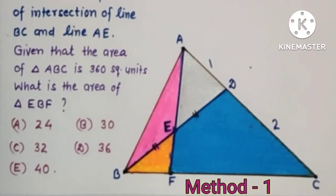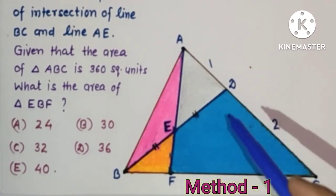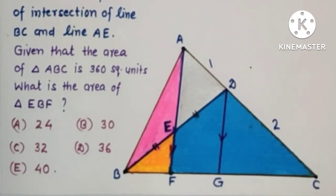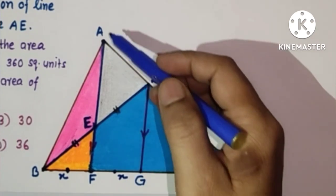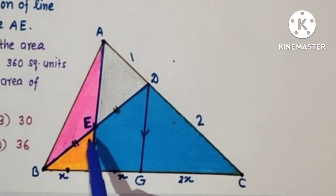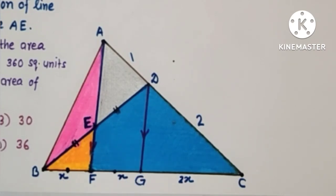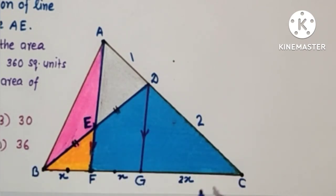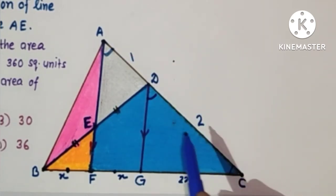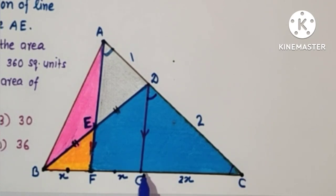In the first method, draw a parallel line parallel to AF from point D. So draw DG parallel to AF. Now in triangle BDG, since E is the midpoint of BD and EF is parallel to DG, then by the midpoint theorem, F will also be the midpoint of BG. So if BF is X then FG will also be X. Now from triangles CDG and CAF, these two triangles are similar. Using the basic proportionality theorem, CD to DA is equal to CG to GF.